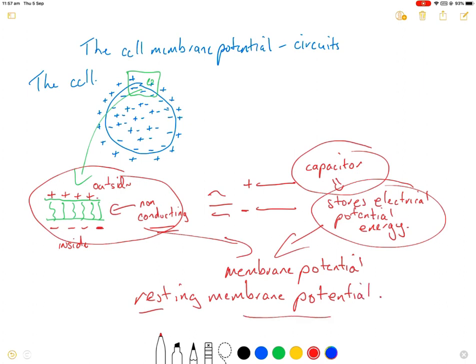Now this resting membrane potential is really important. And the reason why it's really important is because by changing the membrane potential, so changing from rest, we change the activity of the cell. So it's a way of causing a response in the cell, to change its membrane potential away from rest.